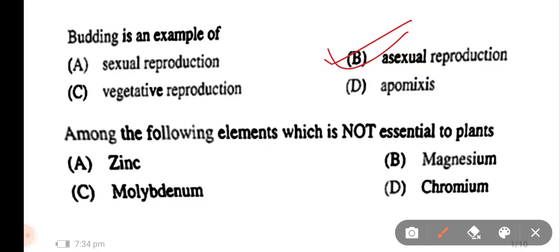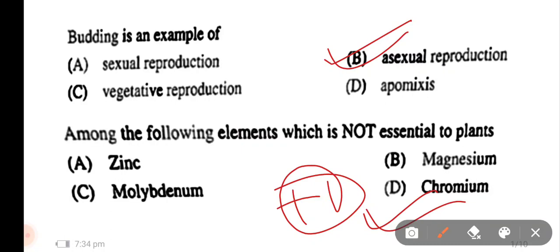Question number 2: among the following elements, which is not essential to plants? The options are Zinc, Magnesium, Molybdenum, and Chromium. The right answer is option number 4 — Chromium is not essential to plants. Zinc and Magnesium are essential to plants.